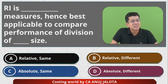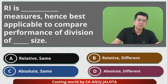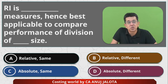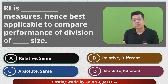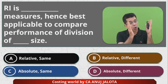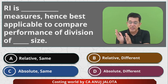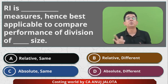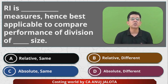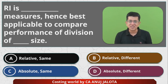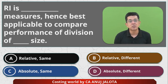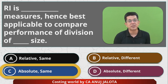RI is an absolute measure — it gives you a rupee analysis. And hence it is best applicable to compare the performance of divisions that are of the same size. If two divisions are very different in size — one large with lots of plant and machinery, one small with few products and little fixed assets — you cannot compare absolute returns because the base is not the same. So RI should only be used to compare divisions of similar sizes. Therefore the answer is C: absolute-same. See you all next time, bye, take care.